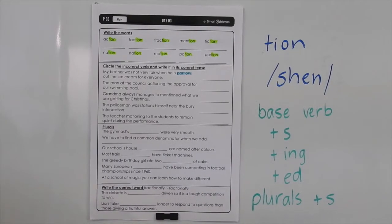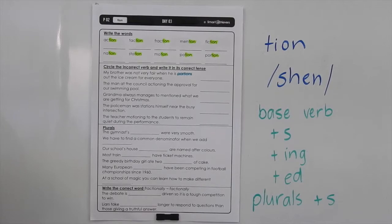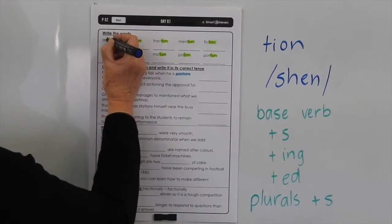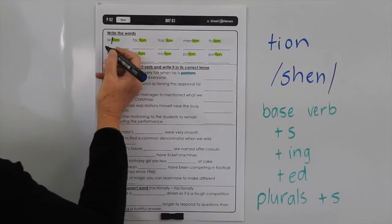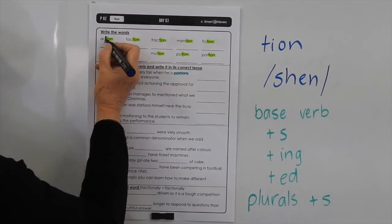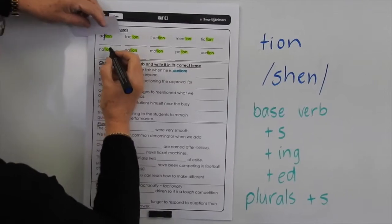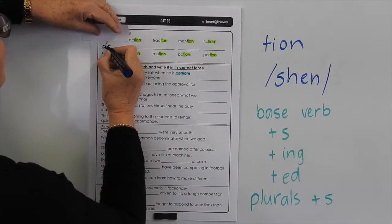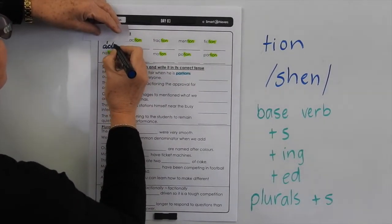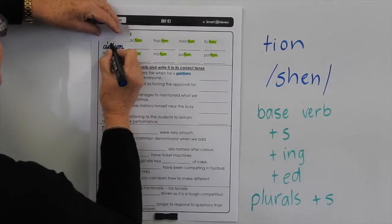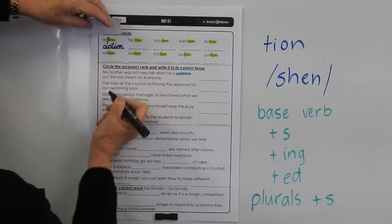Don't forget to go back now and we're going to read the words, sound the words, and spell them. So we've got 'action' — we can break them into their syllables again. Action. A-C-T-I-O-N. Cover it. Write it. If you're using running writing, don't forget to go back and cross your T and dot your I.